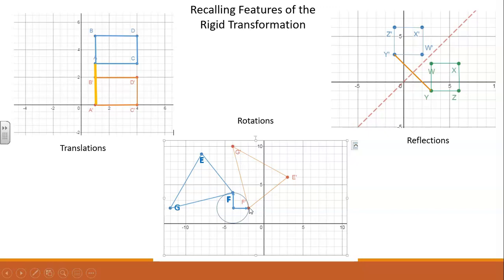When you connect the points from the image point to the center of rotation to the pre-image point, you find that you have two segments that are congruent, and the angle made with those segments is the angle of rotation.